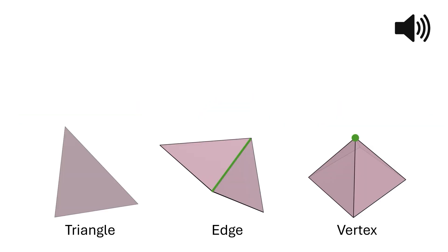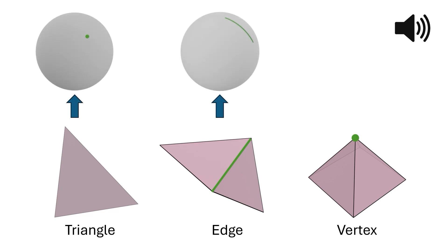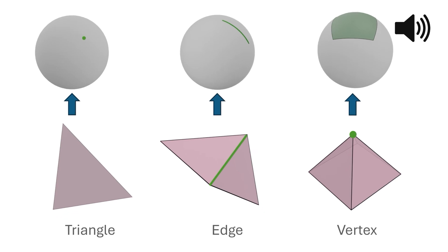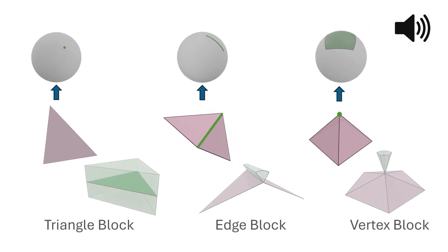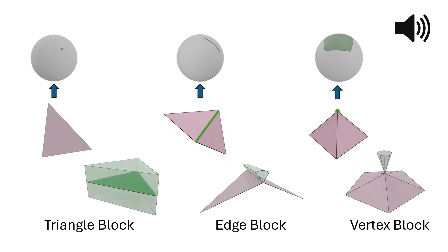The normal of each type of face is given by the polyhedral Gauss map, which maps triangles to points, edges to arcs, and vertices to polygons on the unit sphere. Offsetting points on a face along its normals creates volumetric building blocks for our geometry.